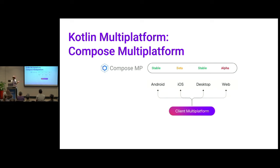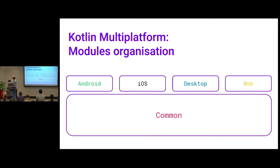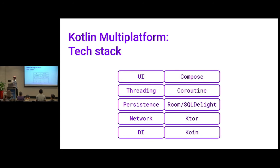Compose Multiplatform has already reached stable for Android and desktop. iOS is not too far behind, and web is in alpha. The way a project is organized with Kotlin Multiplatform is that your Kotlin code lives in the common module, and all your platform-specific code lives in different modules like Android, iOS, desktop, and web. The KMP tech stack could look like this today: Compose based on Jetpack Compose but brought to you by JetBrains for every platform; threading handled by Kotlin coroutines; the persistence layer by either Room or SQLDelight; networking usually with Ktor; and dependency injection with Koin.